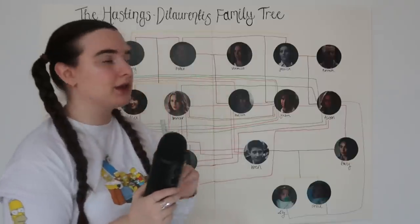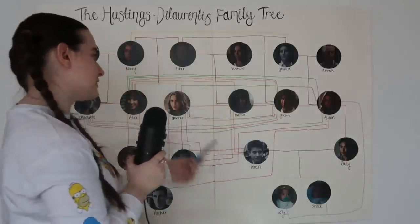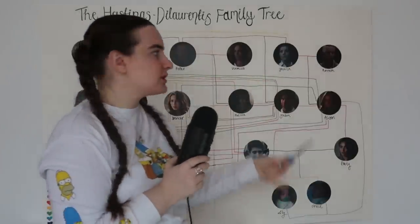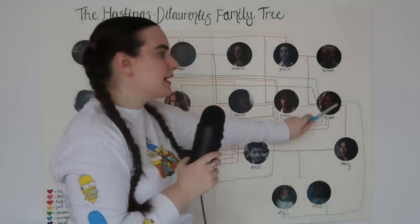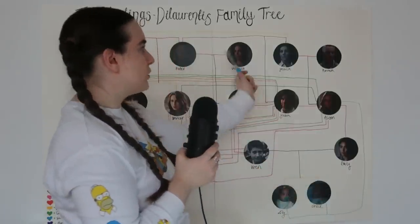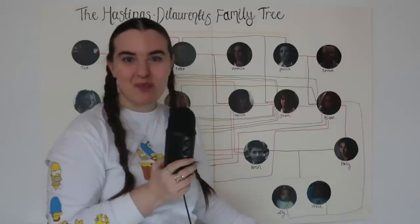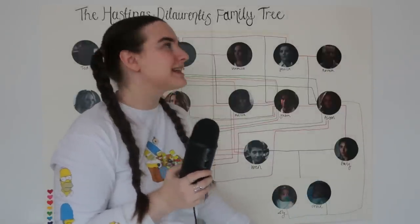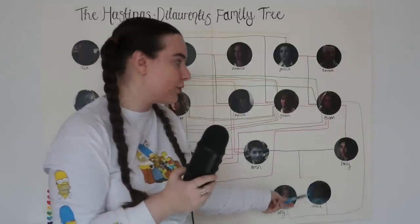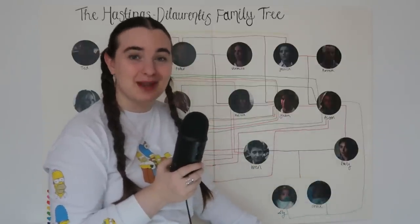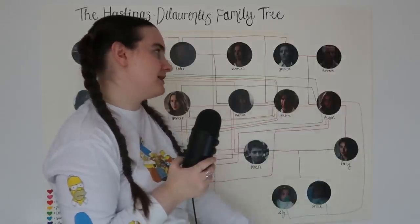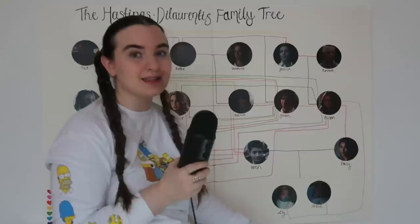I think what they were trying to do was a little nod to the twin thing — Alex and Spencer, Mary and Jessica — twins running in the family. But no, they run in Alison's family. If these were Alison's babies, it would make more sense that they were twins. It makes absolutely no sense why these babies look like this. They're adorable, don't get me wrong, but they don't look anything like Emily. When you see them they look like Alison's babies — that is not how genetics work.